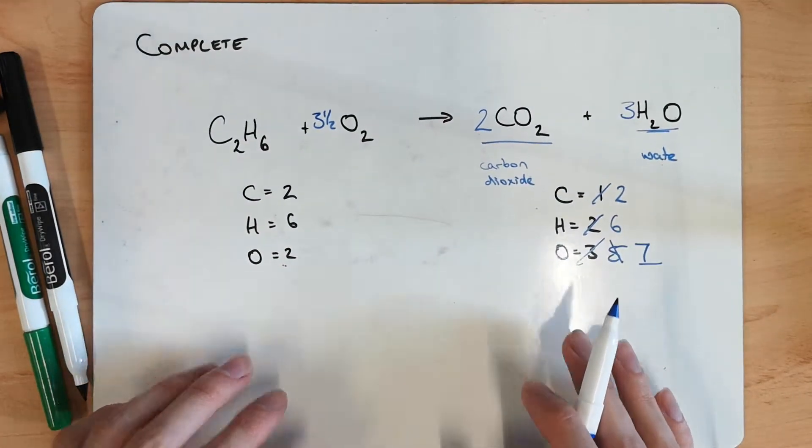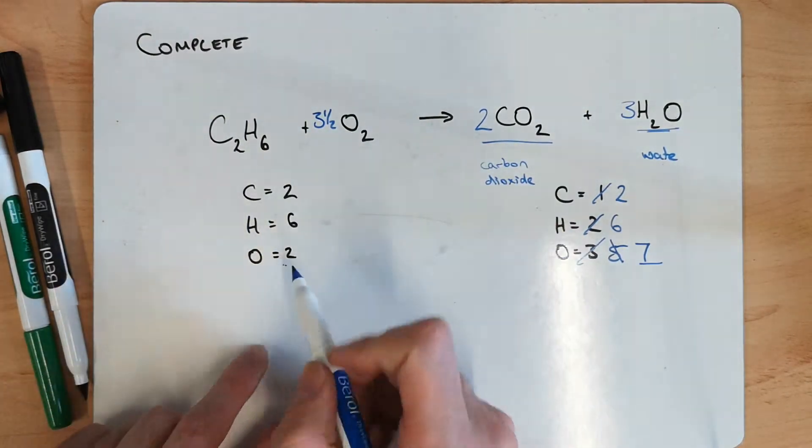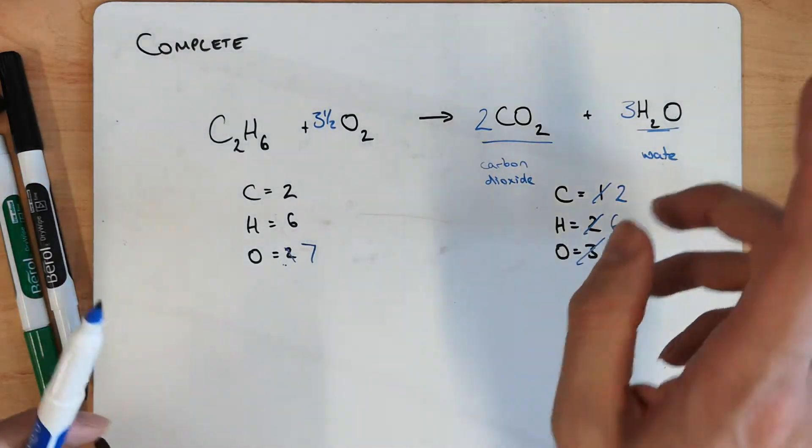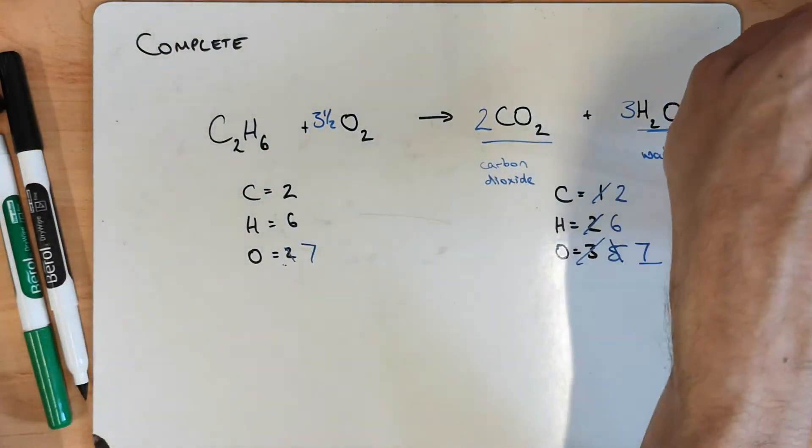And it still makes a whole number. As long as this makes a whole number. We're okay to use fractions. So in this case. Three and a half gets us to seven. And then we're nice and balanced. And that is complete combustion. Where we get carbon dioxide.